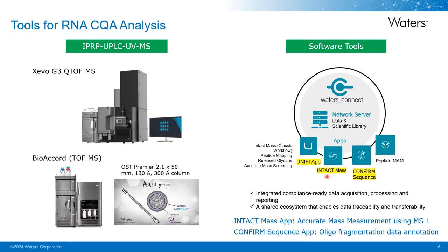The Intact Mass app is general-purpose software that can measure accurate mass for a variety of sample types, including mRNA or synthetic oligos. It takes MS channel 1 data, performs charge deconvolution, and assigns accurate mass information. The Confirmed Sequence app is a more specific tool that can annotate MS-MS fragmentation data from oligos, matching experimental data with in silico-generated fragment ions. Scientists can review the output of the matched spectrum to assess how accurately and confidently the assignment was made.